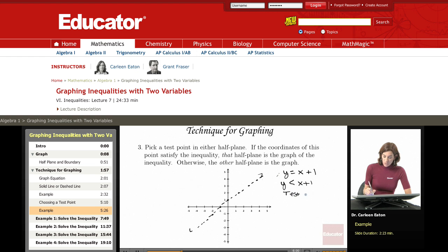What a test point is going to do is it's going to allow me to figure out, do I want the upper half plane or the lower half plane? And the easiest test point to pick is 0, 0, the origin. Therefore, what I'm going to do is I'm going to go back to my inequality, and I'm going to let x equal 0 and y equal 0. And I'm going to determine if that is true, if it satisfies the inequality.